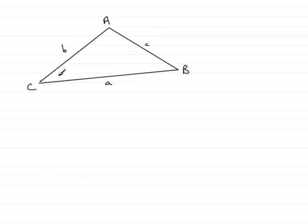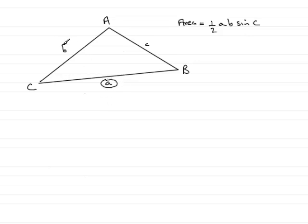Without proof, the area of the triangle is a half ab times the sine of C. What this is saying is that, essentially, if you know two sides — let's say a and b — and you know the angle that is between these two sides, often referred to as the included angle, angle C, then this is the formula that we can use.